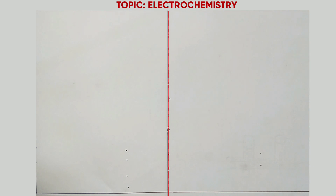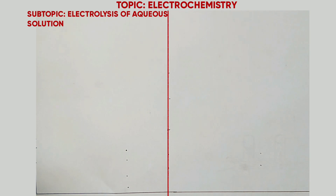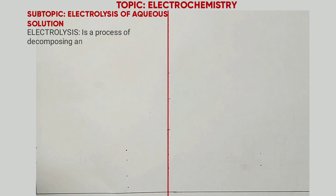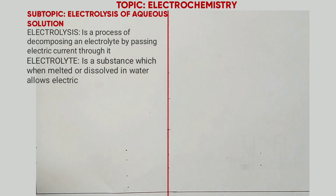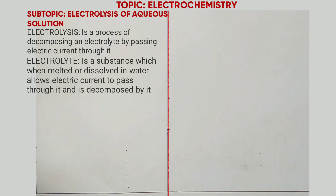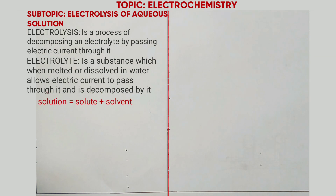Today's topic is electrochemistry; the subtopic is electrolysis of aqueous solutions. Electrolysis is defined as a process of decomposing an electrolyte by passing electric current through it. An electrolyte is a substance which, when melted or dissolved in water, allows electric current to pass through it and is decomposed by it. In this topic we are looking at electrolysis of aqueous solutions. A solution is formed by mixing a solvent and a solute; the solutes can be an acid, a salt, or an alkali, and the solvent used is water.